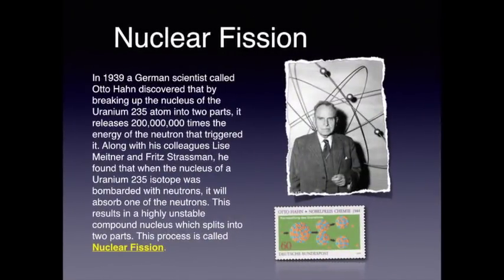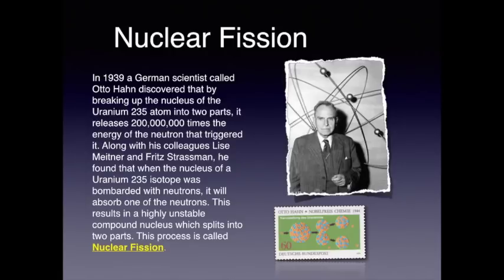The background to nuclear power. In 1939, a German scientist called Otto Hahn discovered that by breaking up the nucleus of a uranium-235 atom into two parts, it releases 200 million times the energy of the neutron that triggered it. Along with his colleagues Lisa Meitner and Fritz Strassmann, he found that when the nucleus of a uranium-235 isotope was bombarded with neutrons, it will absorb one of those neutrons. This results in a highly unstable compound nucleus, which then splits into two parts — a process called nuclear fission. A German postage stamp from 1944 commemorated Otto Hahn's discovery and his Nobel Prize for chemistry that year.